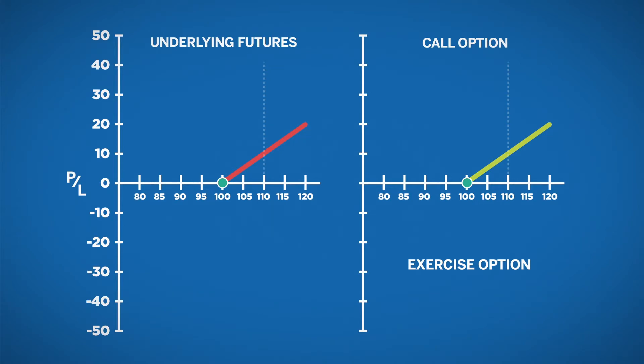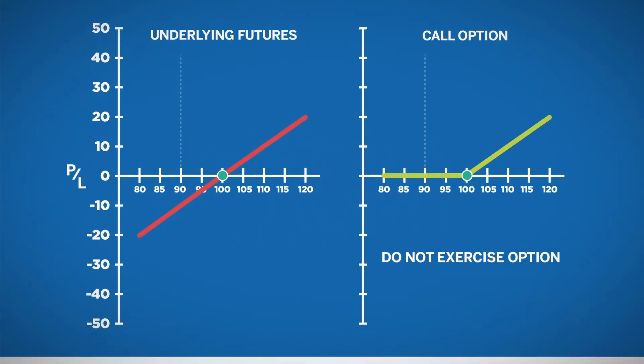This is when the call will have the same profit potential as the underlying future. However, when prices move down, you are not obligated to buy the future at the strike price, which is now higher than the futures price because that would create an immediate loss.